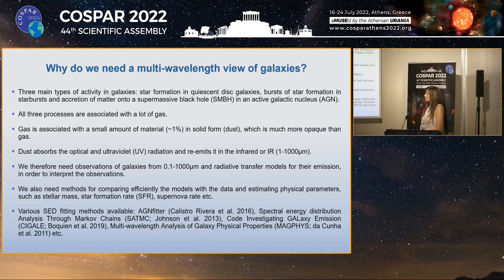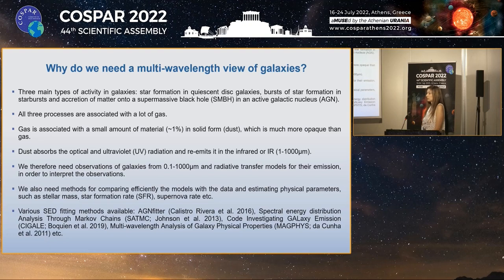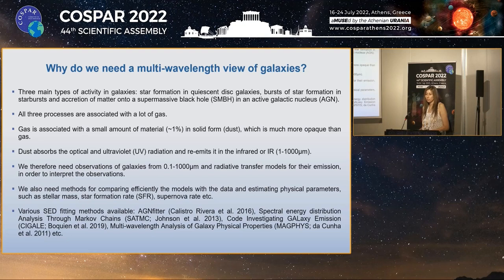In addition, we need radiative transfer models for the emission of galaxies in order to interpret the observations. We also need methods to compare the models with the data and get realistic estimates of the physical parameters of interest. There are many SED fitting methods available, such as AGN-FITTER and SATMC, which are MCMC-based SED fitting codes, as well as other Bayesian approaches such as CIGALE and MagPhys.